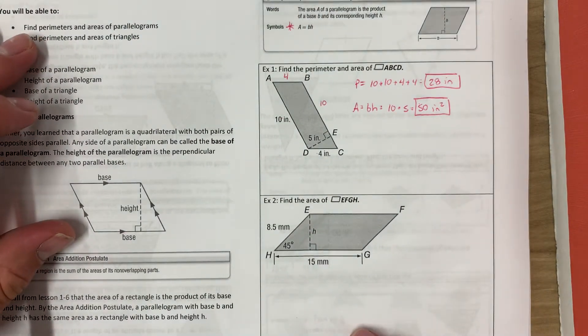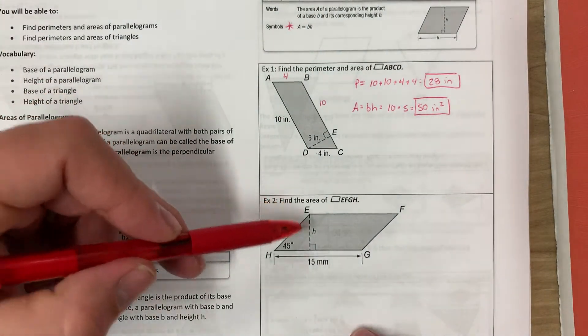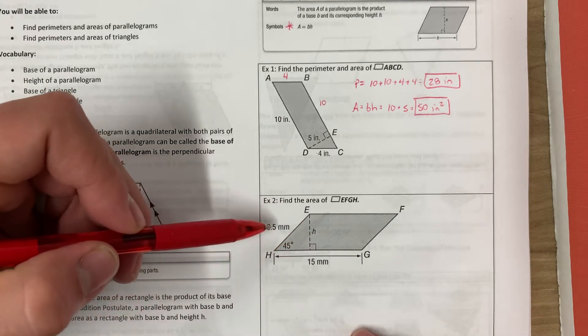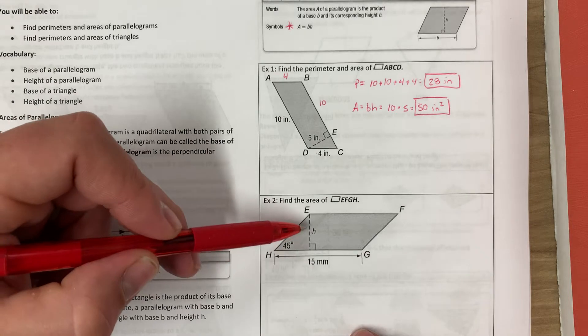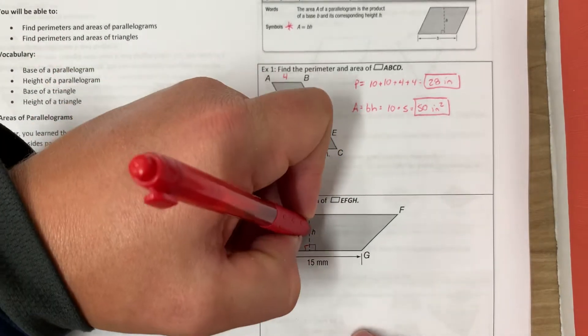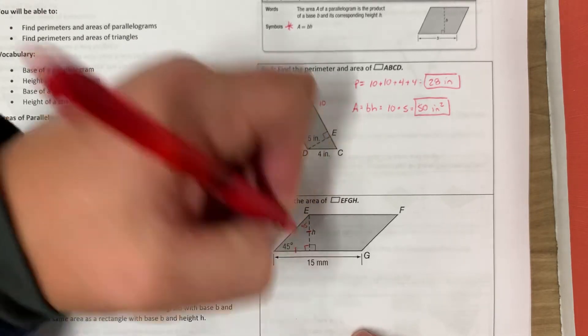For this guy right here, we need to find the area. We need to find H to find the area. So we need to recognize that this is a 45-45-90 triangle. So this would be 90, this would be 45, which makes these two sides congruent.